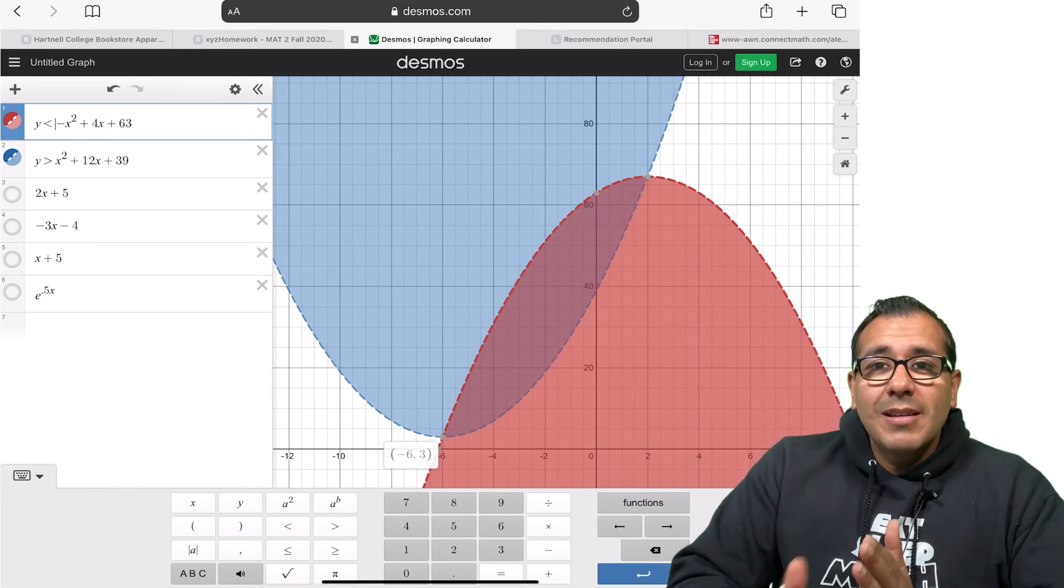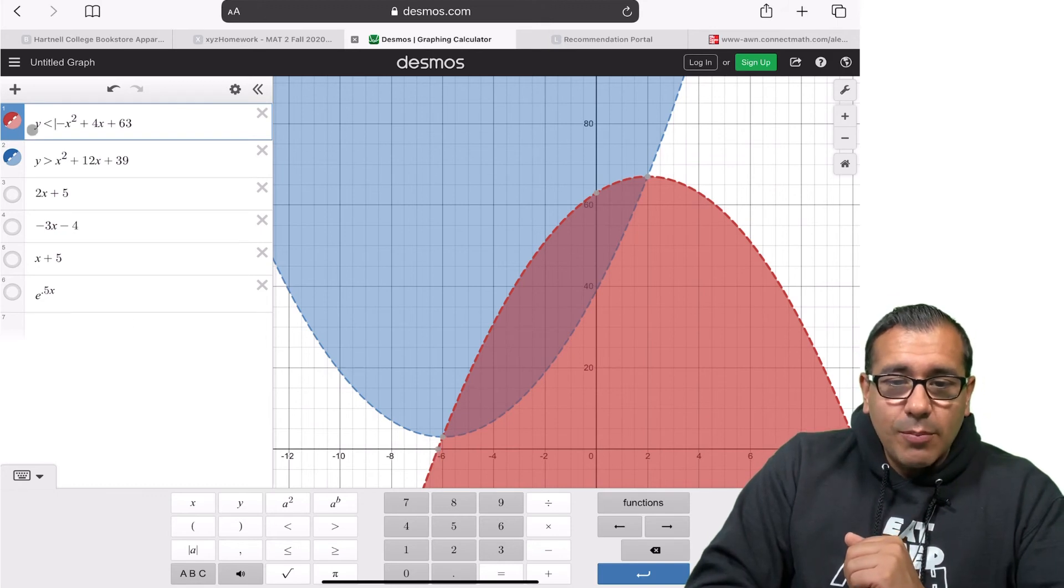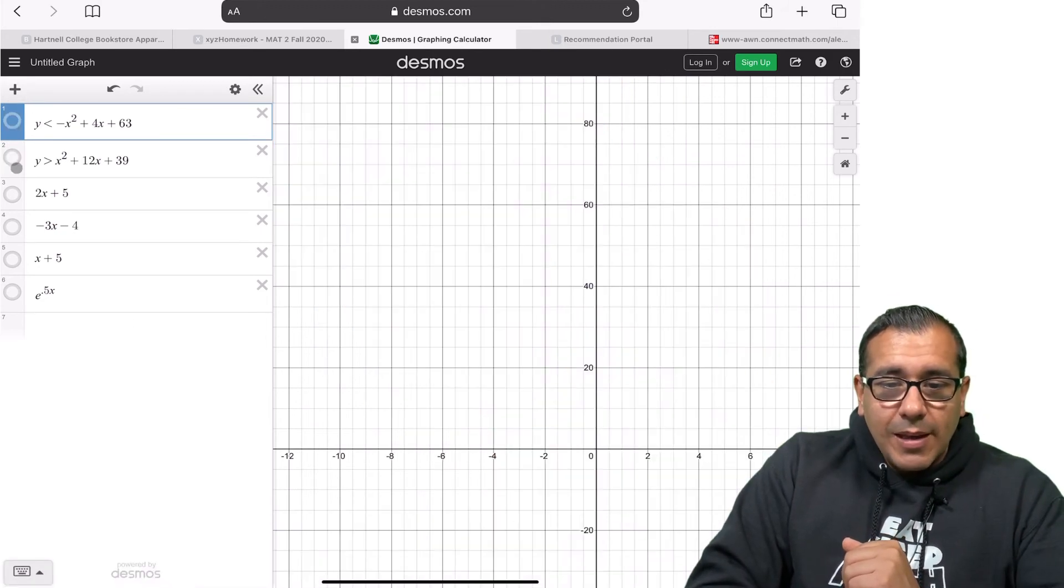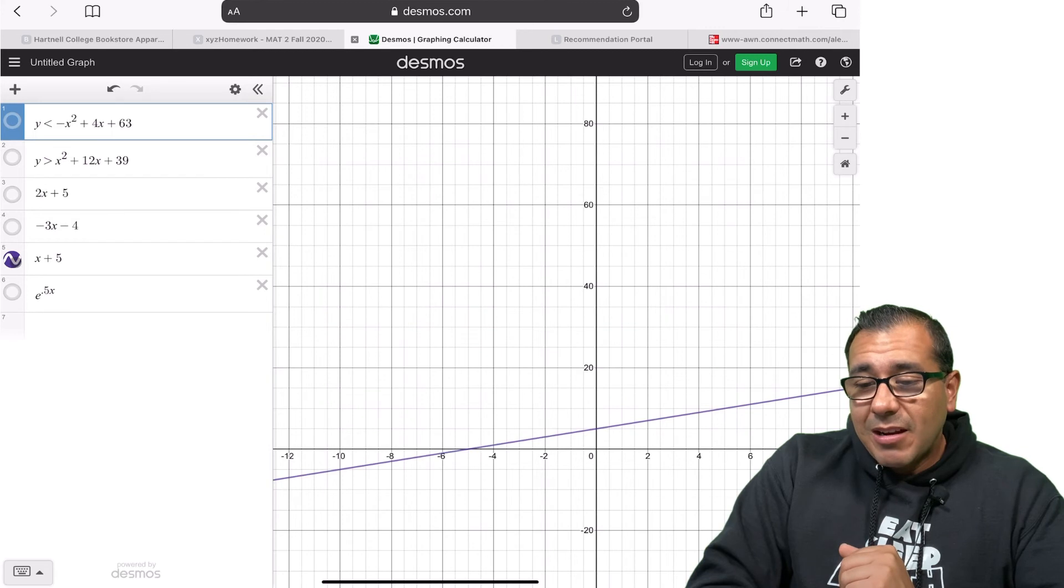And what happens if we get into some crazier functions, that's when Desmos is even more helpful. So let's look at our last two examples. Let me unhighlight these. And let's look at, say we have this line here, but then we have an exponential function like this.